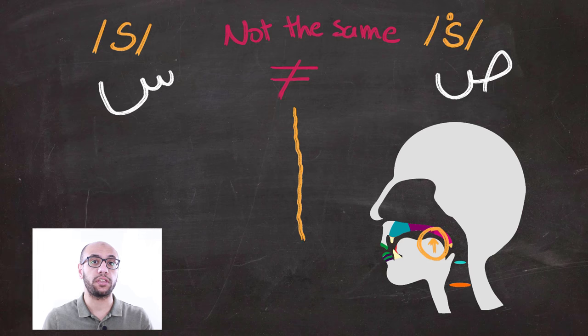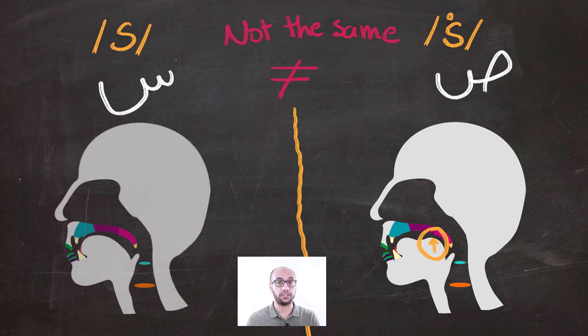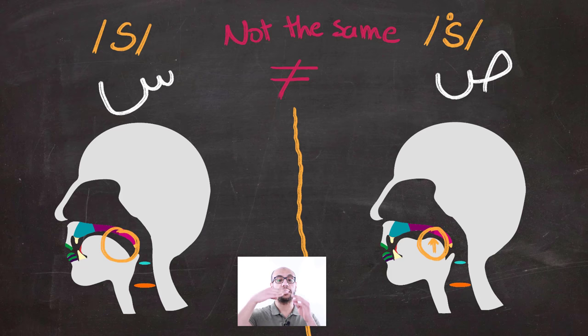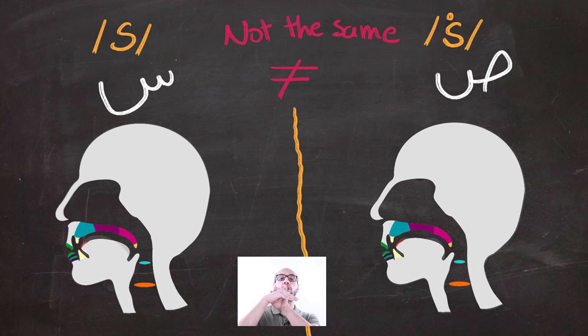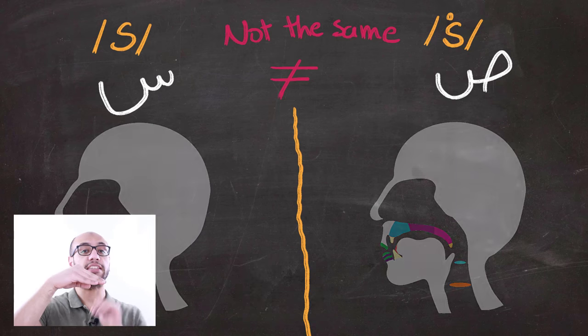Otherwise, you will end up with a Se sound in which the tongue looks like that. The tip of the tongue will also be downwards behind the front teeth, but the back of the tongue is not raised and this produces that Se sound.